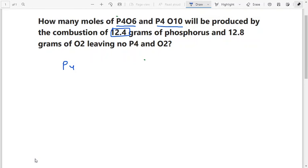This question is solved by a concept known as the principle of atomic conservation. We'll solve this question using the principle of atomic conservation. The equation is P4 plus O2 gives P4O6 plus P4O10.